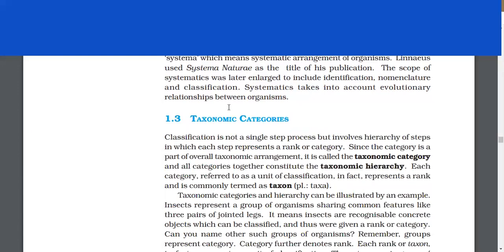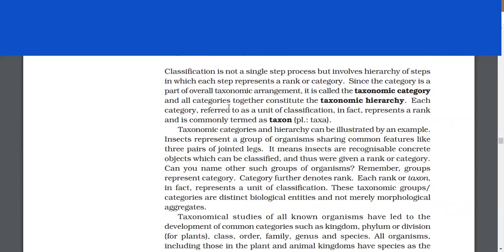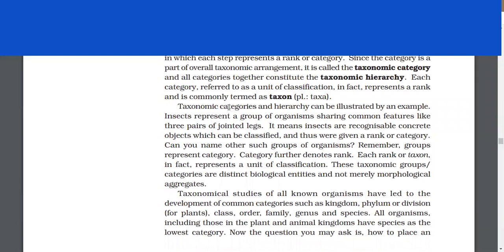Taxonomic categories. Classification is not a single-step process, but involves hierarchy of steps in which each step represents a rank or category. Since the category is a part of overall taxonomic arrangement, it is called the taxonomic category, and all categories together constitute the taxonomic hierarchy. Each category, referred to as a unit of classification, represents a rank and is commonly termed as taxon.